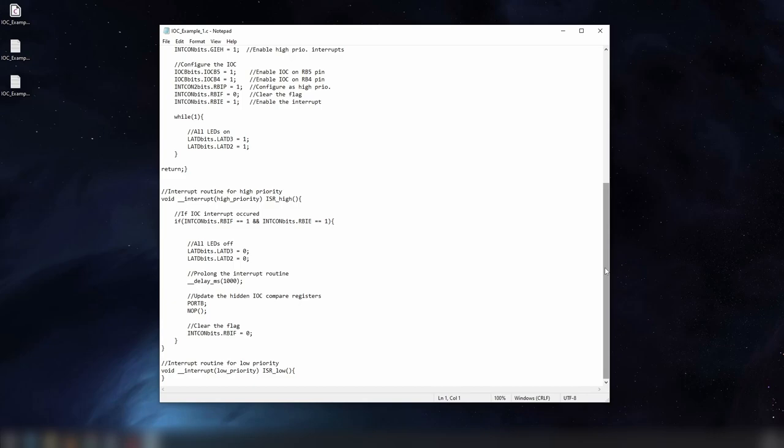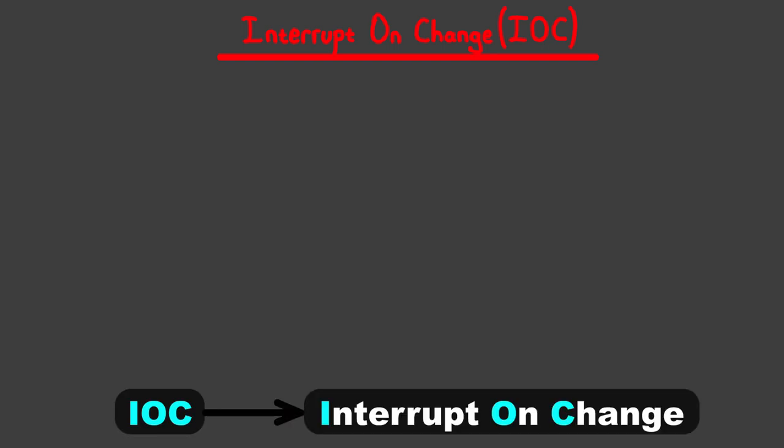Let's get started. Try to remember the term IOC, which stands for Interrupt on Change, as I'll be using the abbreviation more than the full name since it's so long. You can think of IOC as a budget or alternative external interrupt. They're similar in nature, but the use cases of IOC are a bit more specific. It actually has a lot of traps you may fall into, which is why I don't recommend using it unless you have to. Use external interrupts instead if you can.